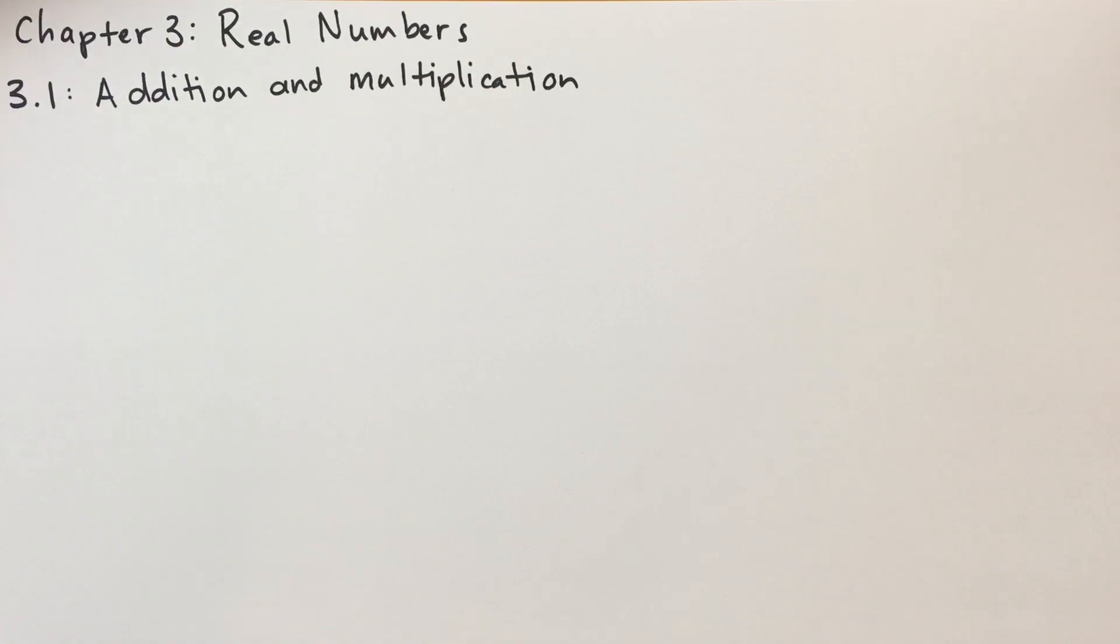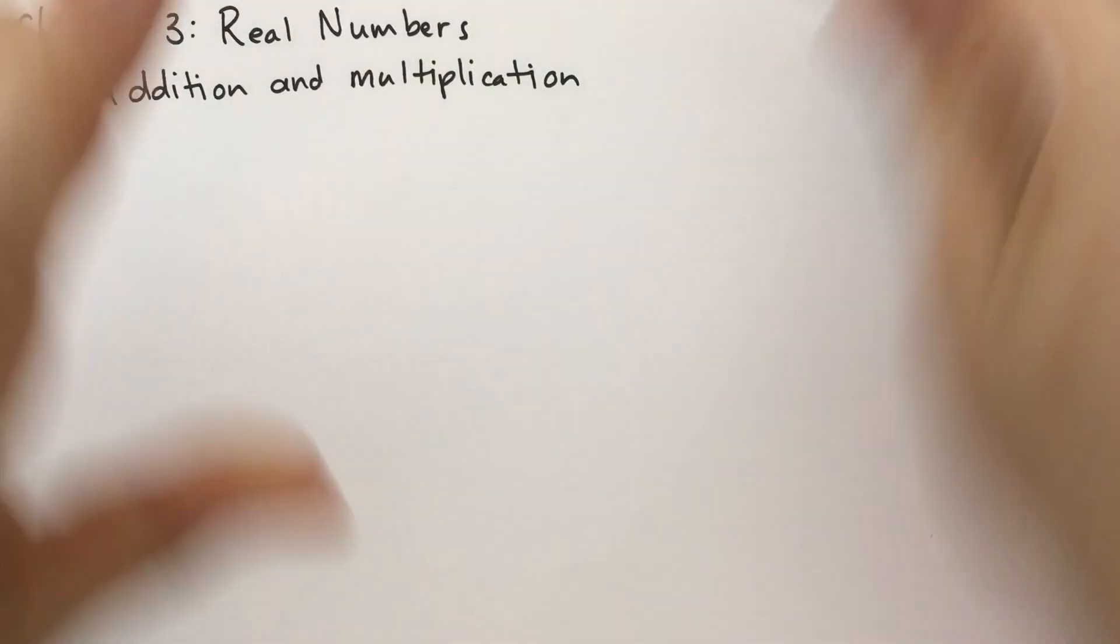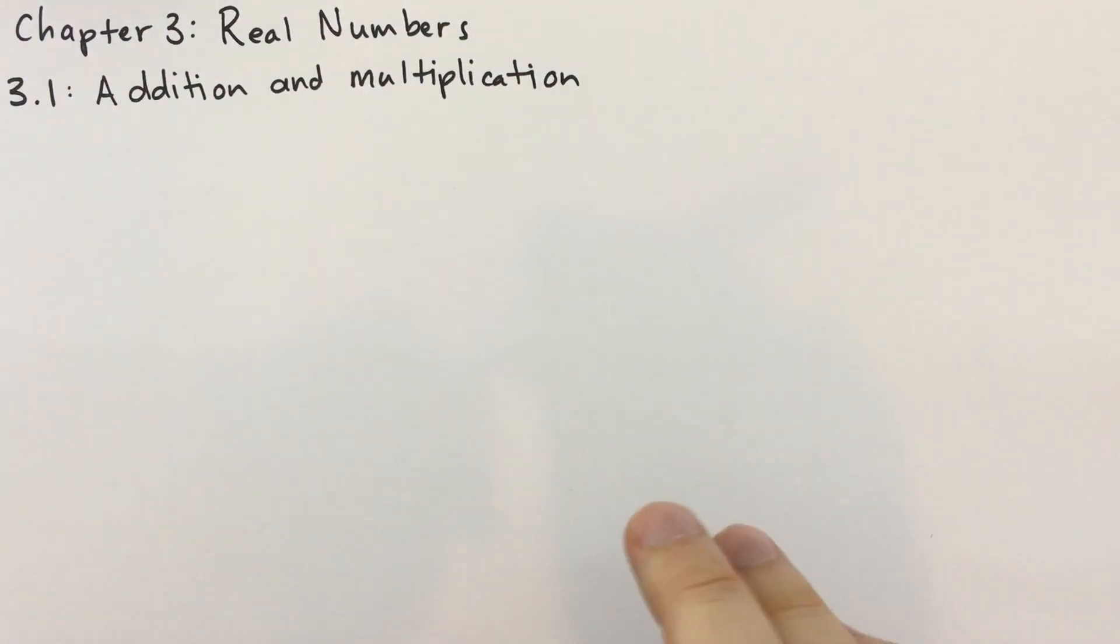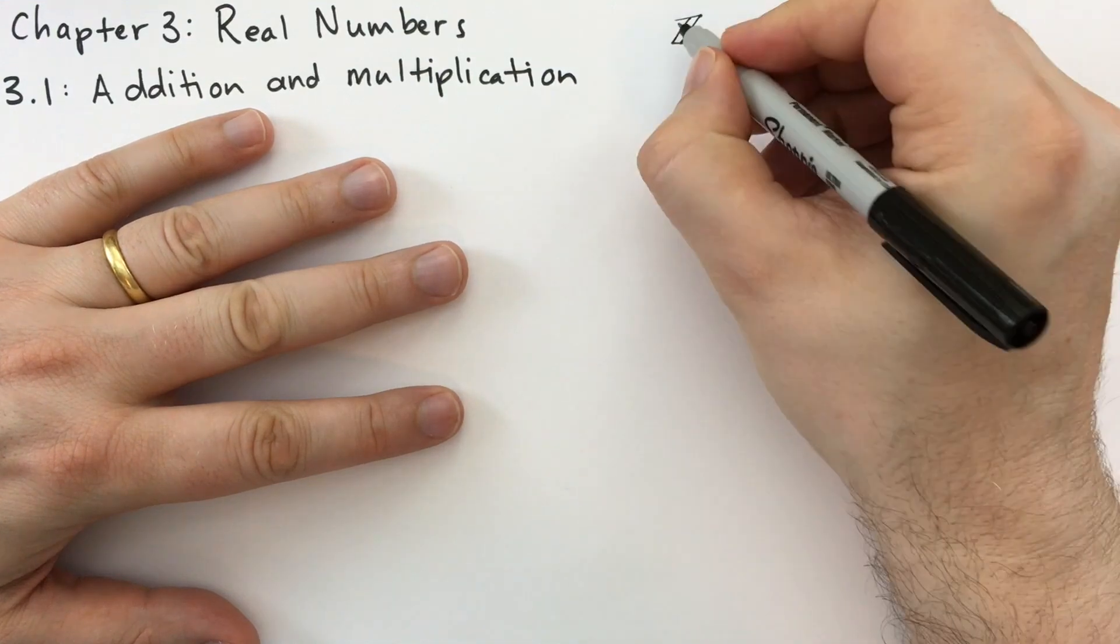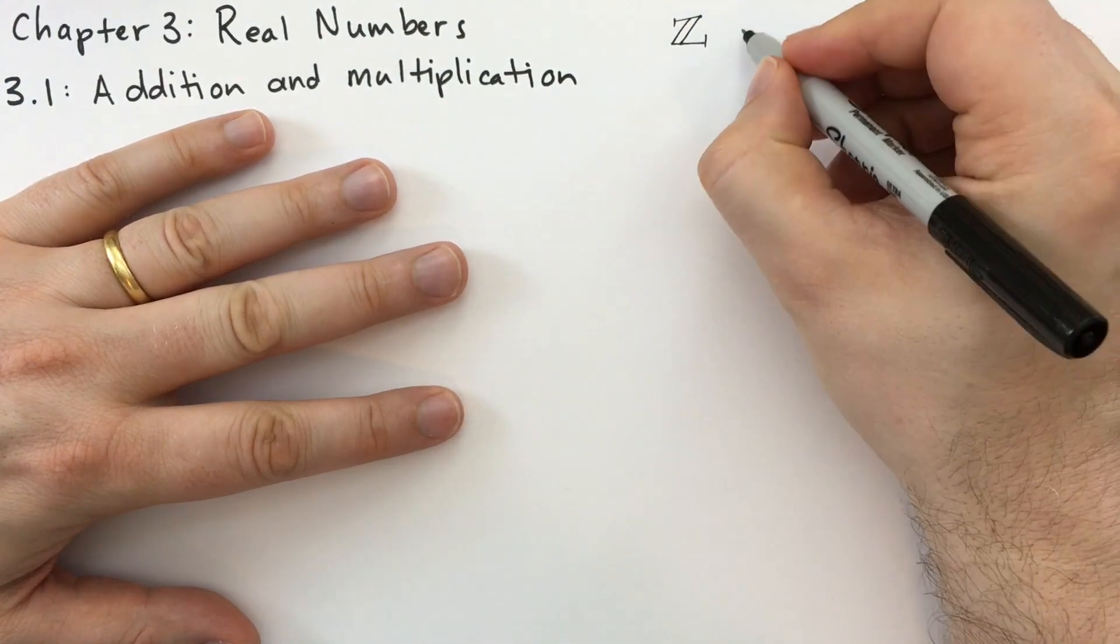So we've played with the integers, and if you want to know the name of the integers, let's use the fine black marker here. So Z, let's see if I can write a good Z here. So Z is commonly known as the set of all integers.